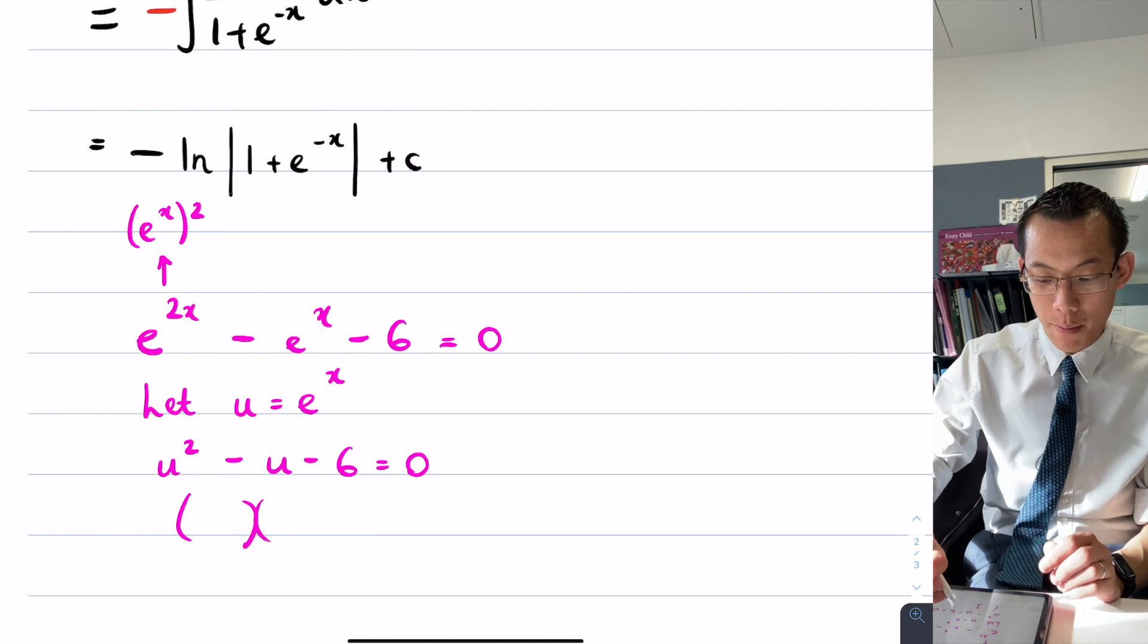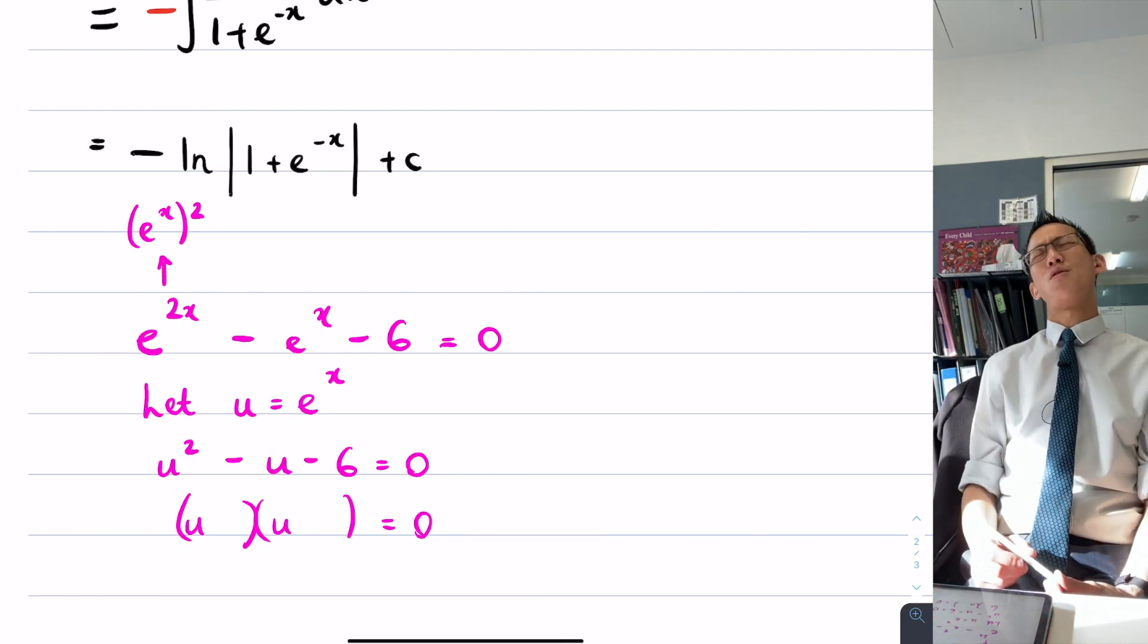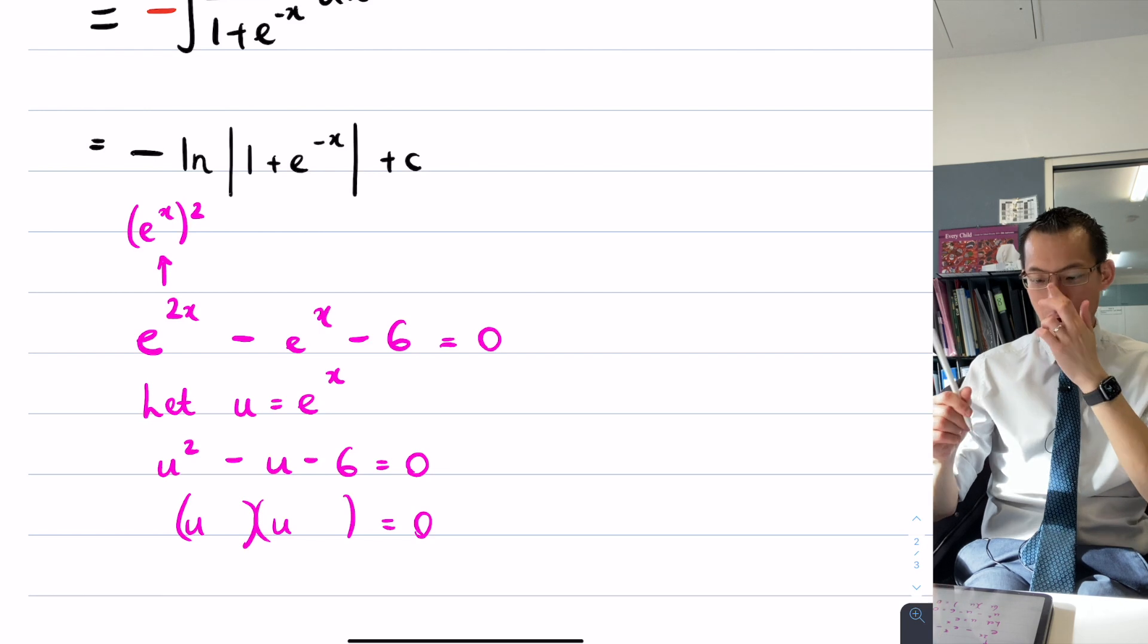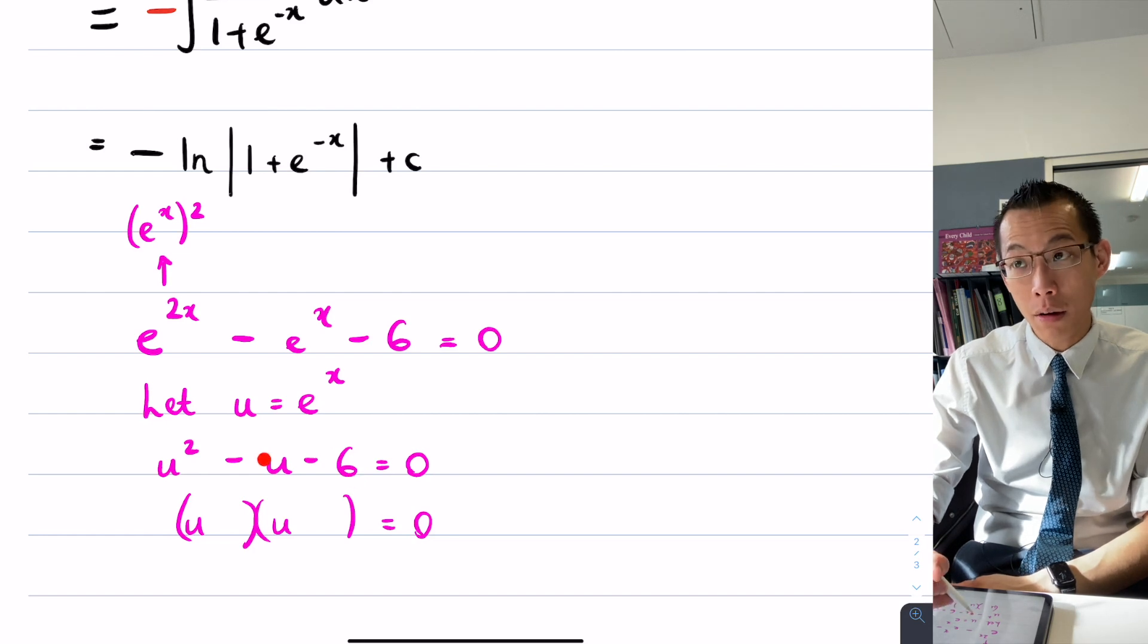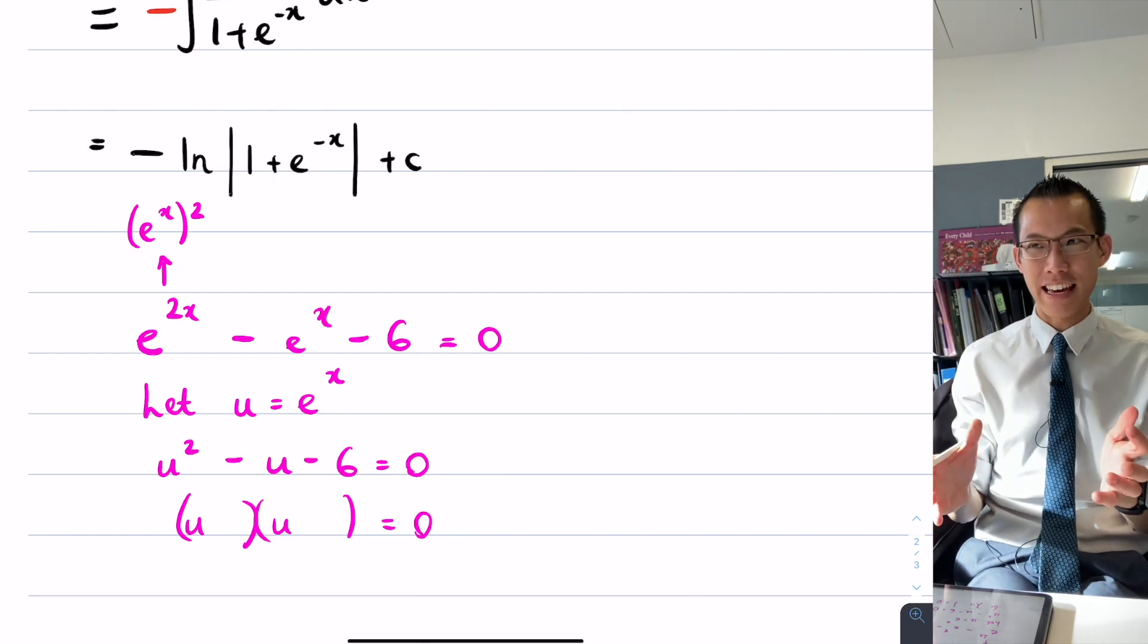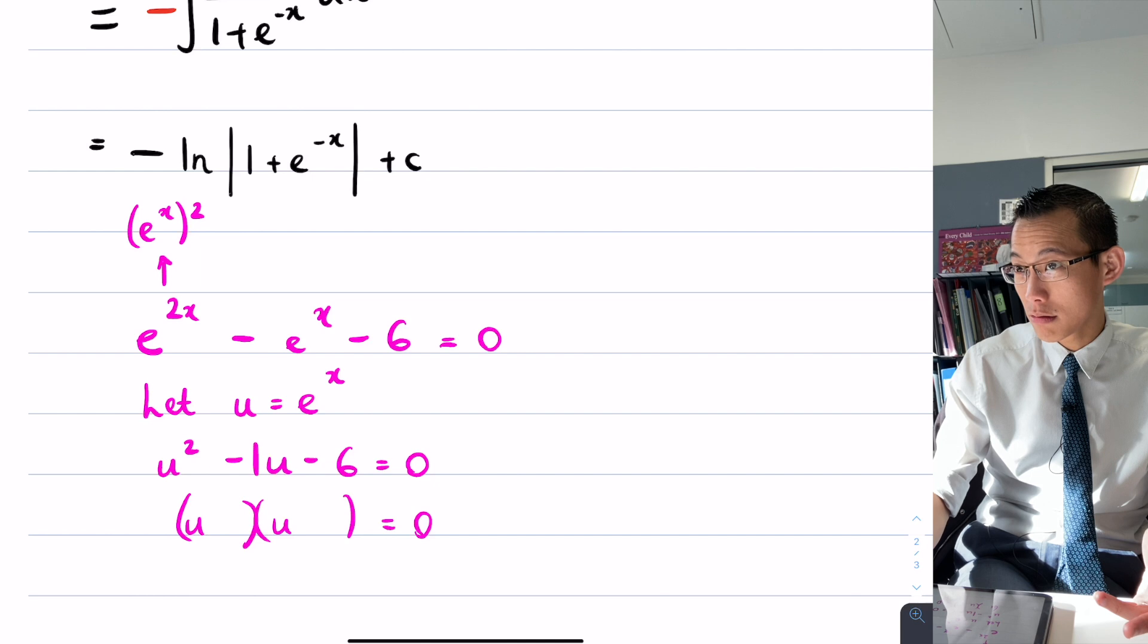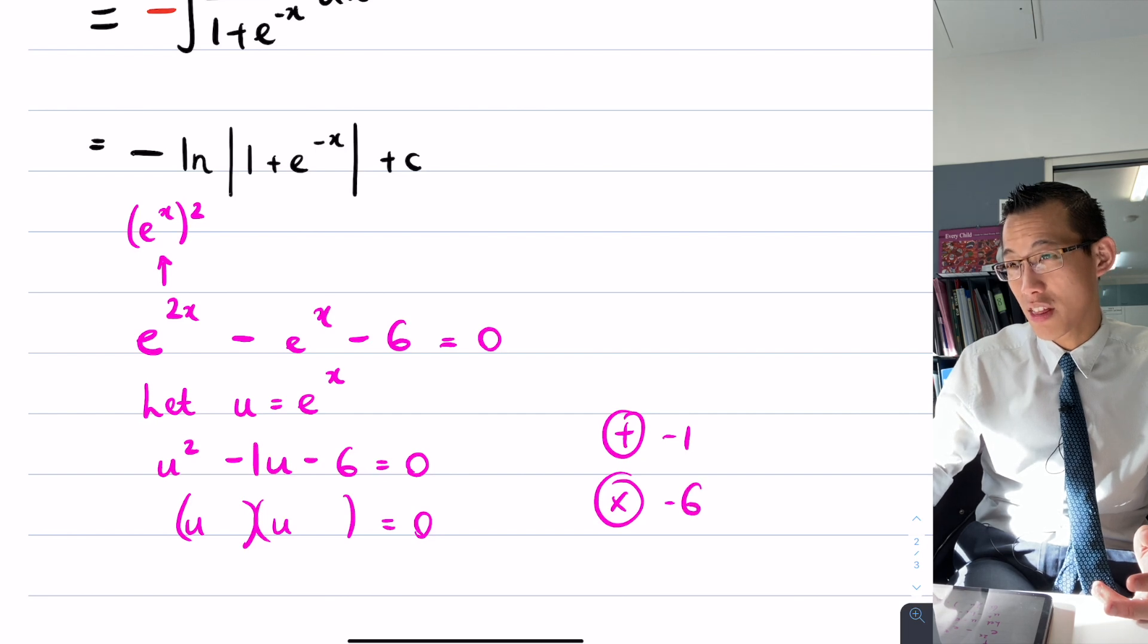Can you tell me the pair of numbers that will add to negative 1 but multiply to negative 6? Generally this number on the end here, it's large in comparison to the other number, so it's multiplication. So if this is the one I'm multiplying to, and this is the one I'm adding to, it adds to negative 1, or they add I should say, and they multiply to negative 6. Can you think of the pair of numbers?